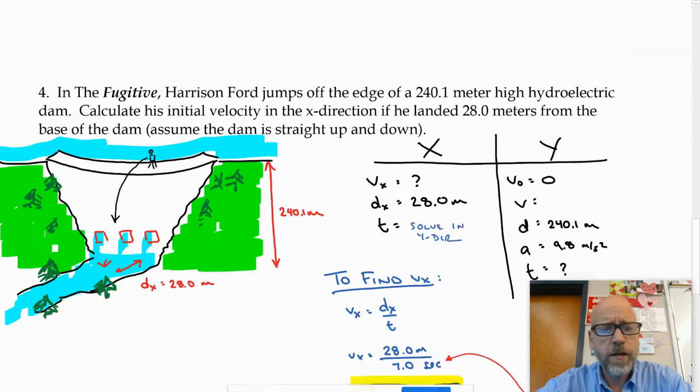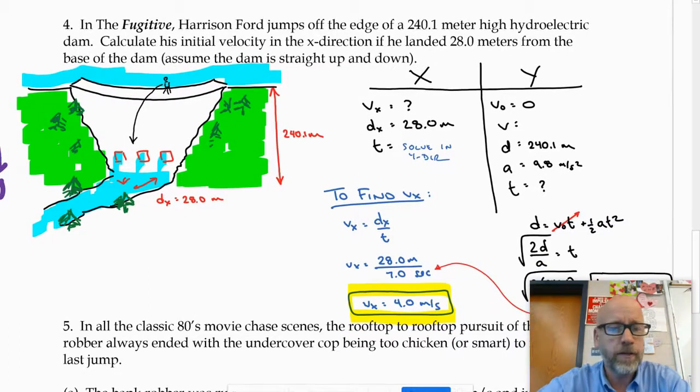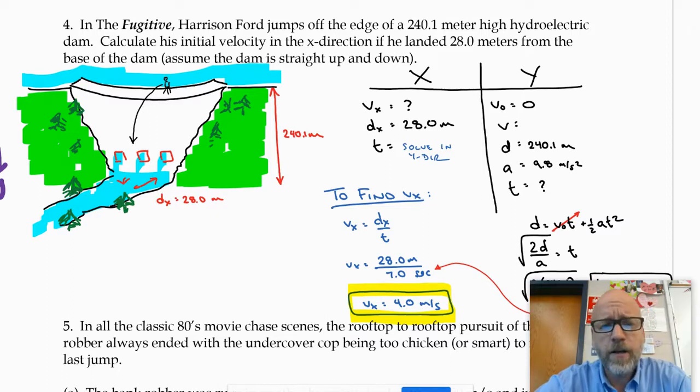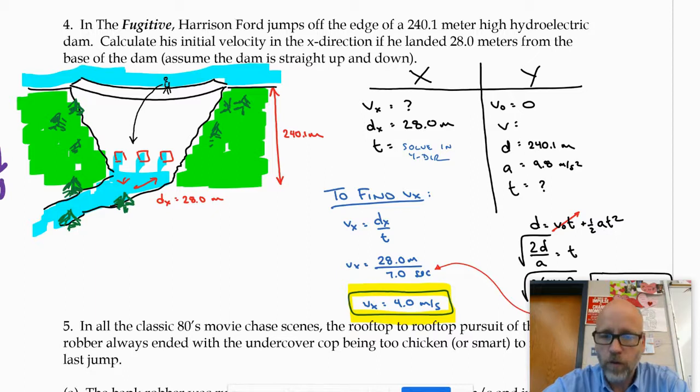Next one here: I referenced a movie that there's barely any chance that you've seen—sorry, I'm turning into an old guy. The Fugitive—Harrison Ford jumps off the edge of a 240.1-meter high hydroelectric dam. It says high; that's a little too high. Calculate the initial velocity in the x-direction if he landed 28 meters from the base of the dam. Assume the dam is straight up and down, even though I know it's not.